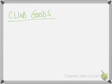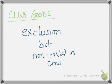Club goods — think of a club. You have to be in the club to enjoy the benefits of club membership, so a club has exclusion: you're either in or you're out. But it's non-rival in consumption. The members of the club can all consume the good without significantly impacting the enjoyment of the others in the club. So you can limit who gets in, but for those who are in, they can all consume without affecting each other's quality of consumption.